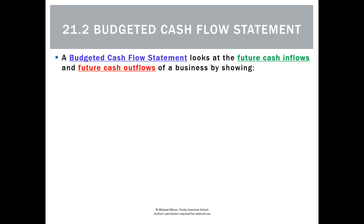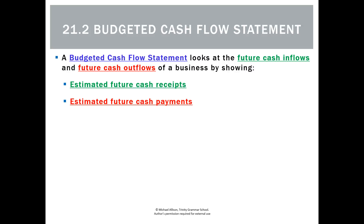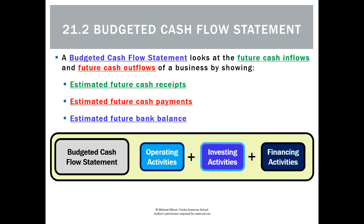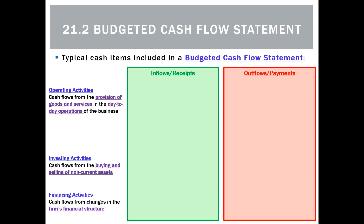The first report we'll look at for budgeting is the cash flow statement. We'll look at estimated future cash receipts, estimated future cash payments, and the final bank balance we think we'll have in the future. We split those into three categories: operating — the cash flows from day-to-day trading of goods and services; investing — buying and selling non-current assets; and financing activities — relating to changes in the firm's financial structure. It's basically a cash flow statement, just predictions about the future.